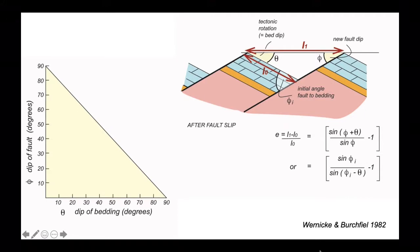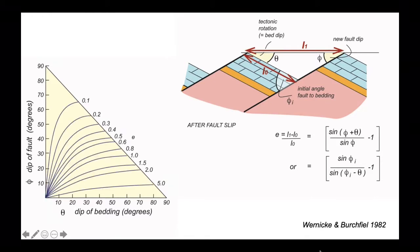So we can plot fault dip against bedding dip and we can make this plot and contour it up in terms of elongation. We can simply report that in terms of the stretching factor beta, which is 1 plus E.